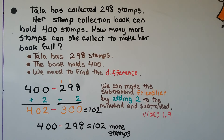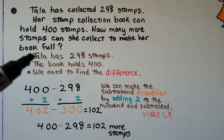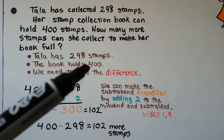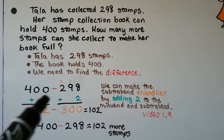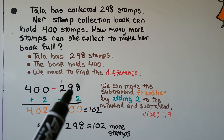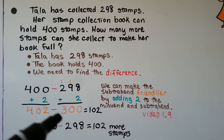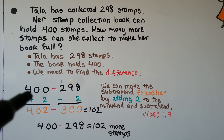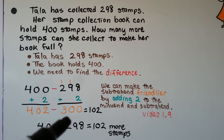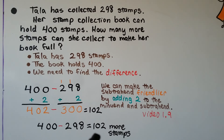Tala has collected 298 stamps. Her stamp collection book can hold 400 stamps. How many more stamps can she collect to make her book full? The important information is that she has 298 stamps and the book holds 400. We need to do 400 minus 298. We can make this subtrahend friendlier by adding 2: 298 plus 2 is 300. But because this is a subtraction problem, we need to add the same amount to the 400, so we have 402 minus 300. Mentally, that's 102. That means 400 minus 298 is equal to 102 — Tala needs to collect 102 more stamps until her book is full.